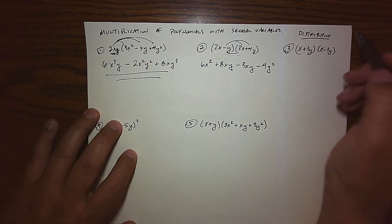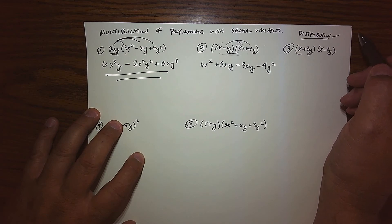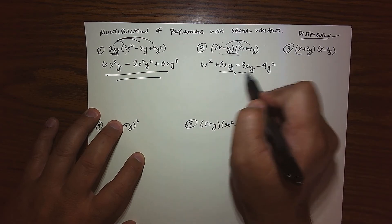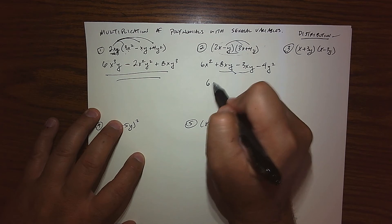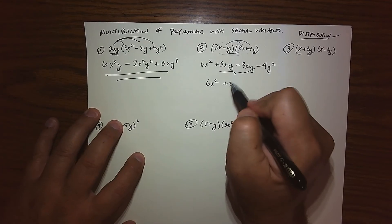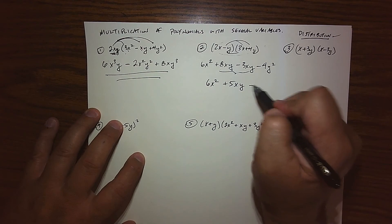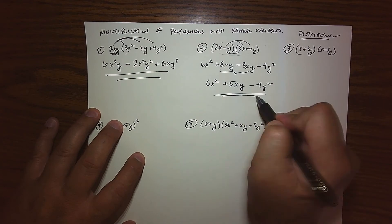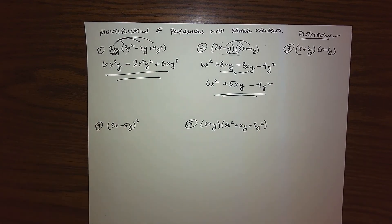So essentially, just our similar distribution, term by term, FOIL, whatever you want to call it, process. We're just tracking one more variable. Looking at like terms, these are the only two terms that are like, they both have xy in it. So we have a 6x squared. We have 8, we subtract 3, so we have 5xy, and then minus 4y squared. So we're all said, and we're all done.